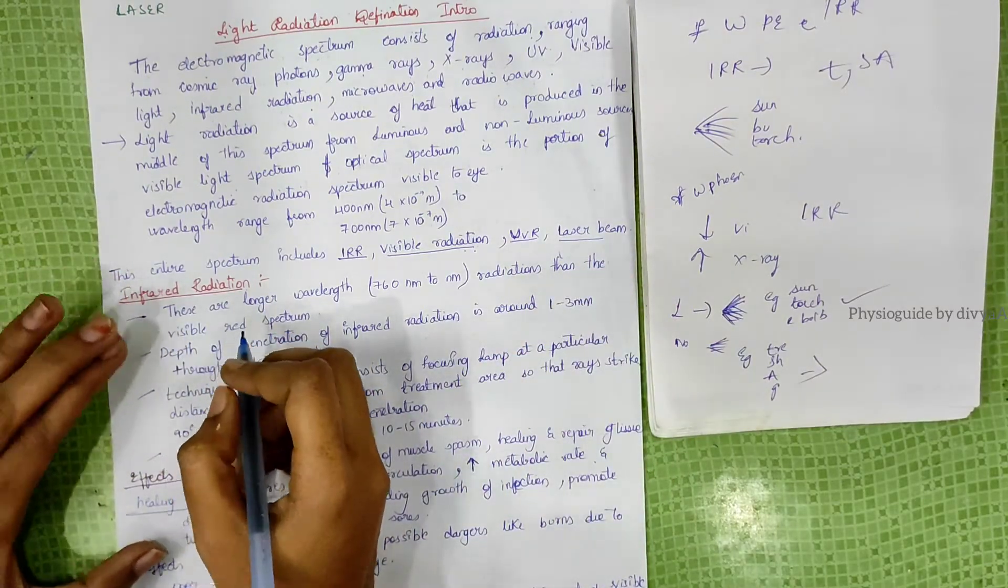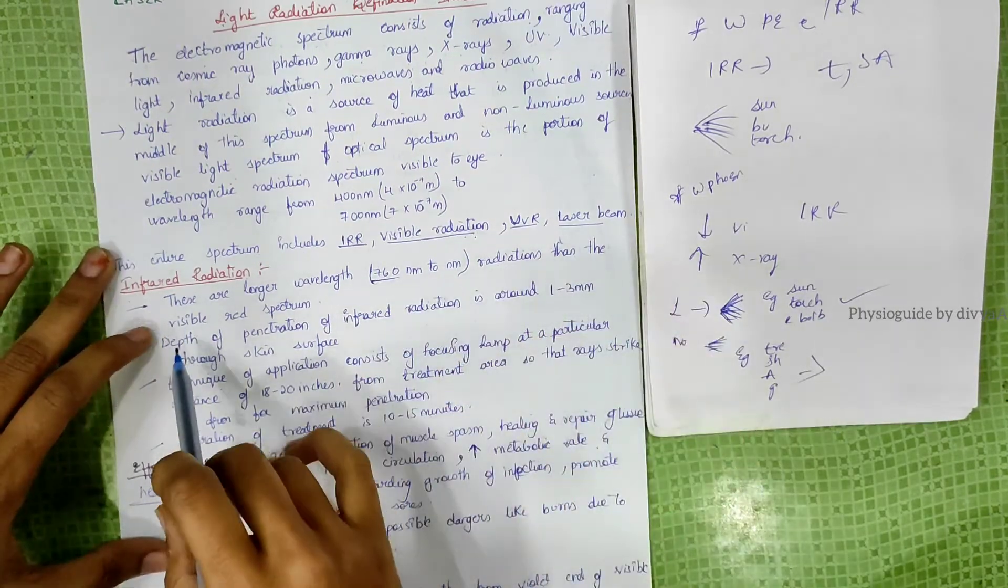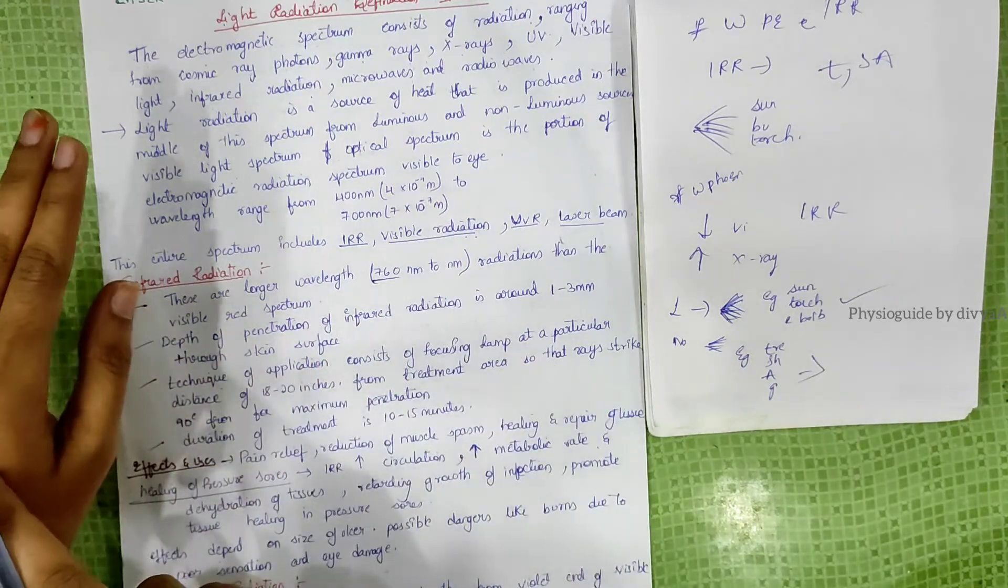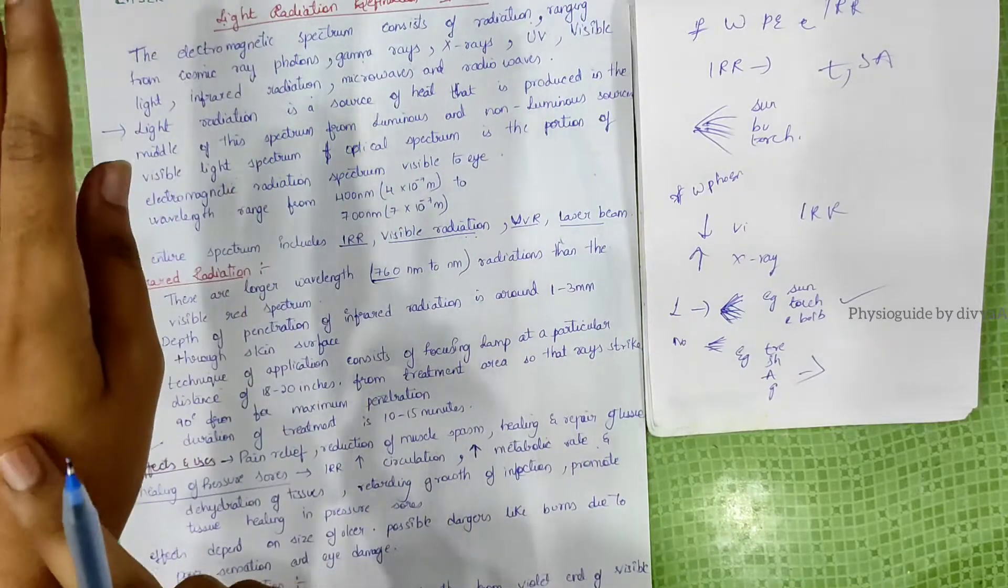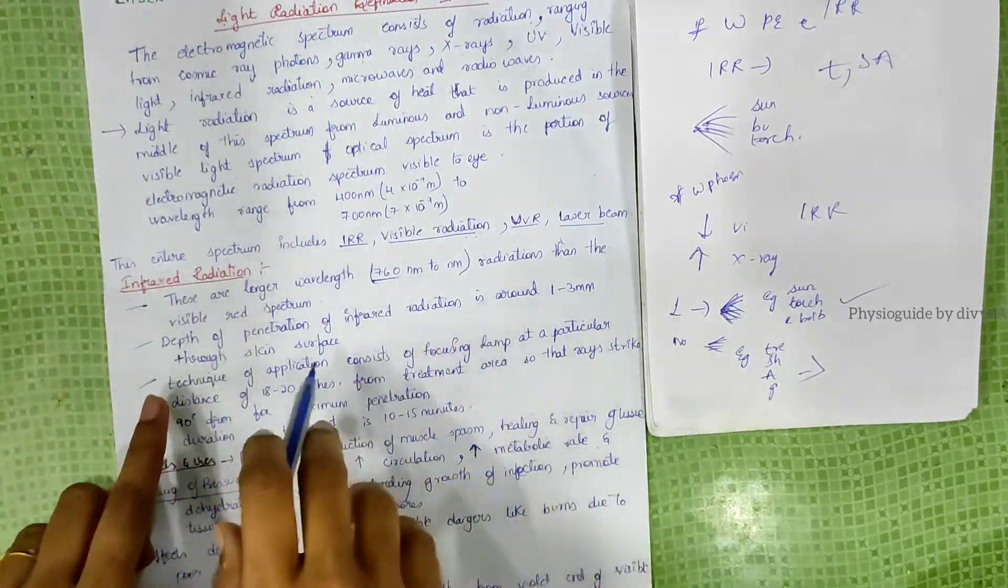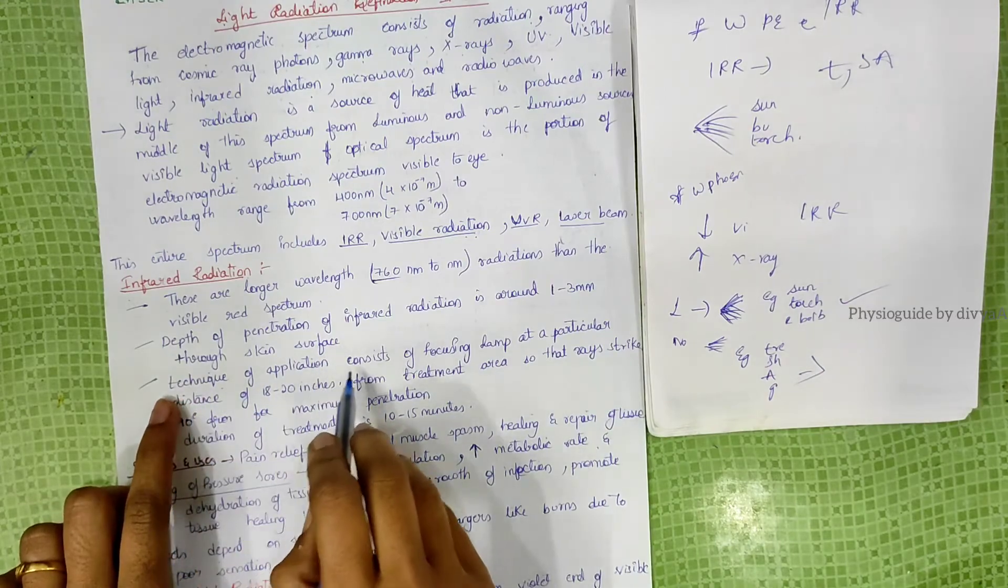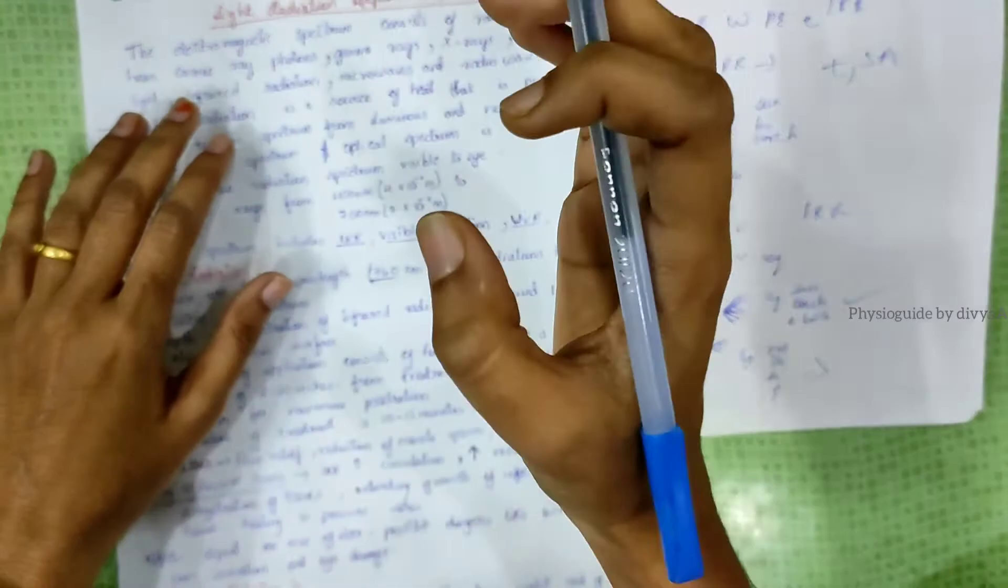Firstly, infrared radiation. They have longer wavelength, about 760 nanometers, greater than the visible red spectrum. The depth of penetration of infrared radiation into the body is 1 to 3 nanometers through the skin surface. The technique of application consists of a focusing lamp.